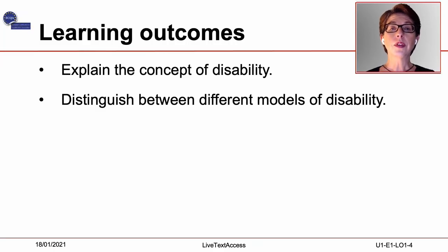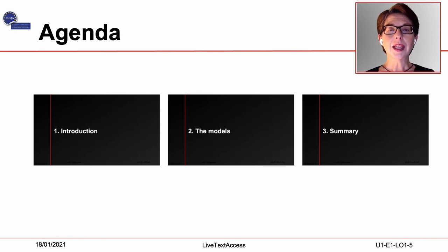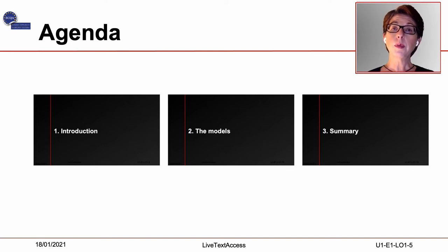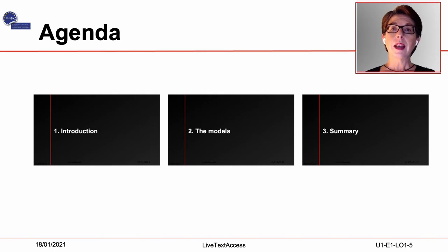On completion of the training sequence, you will be able to explain the concept of disability and to distinguish between several models. Let's take a look at the agenda. First, we will talk in the introduction about how different perspectives have led to different approaches to disability in the past. Then, we will talk about four main models of disability and discuss the main ideas behind them. Lastly, we will end this video lecture with a summary.